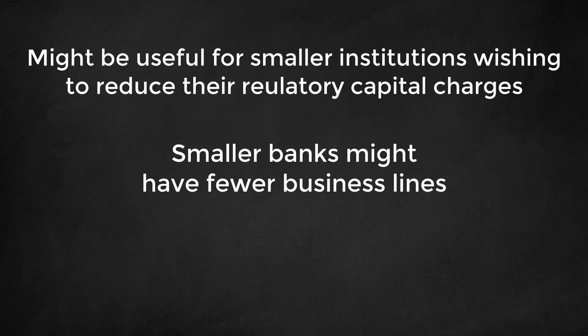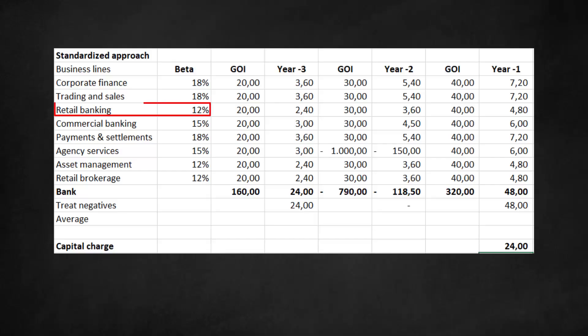For the simplest financial institutions this could be just retail banking. The other business lines are absent and do not generate income. This would mean that the 12% beta for retail banking applies to the entire gross income. Effectively, this results in a drop of the capital charge from an alpha of 15% under the basic indicator approach to just 12% under the standardized approach. Thanks for watching and good luck.